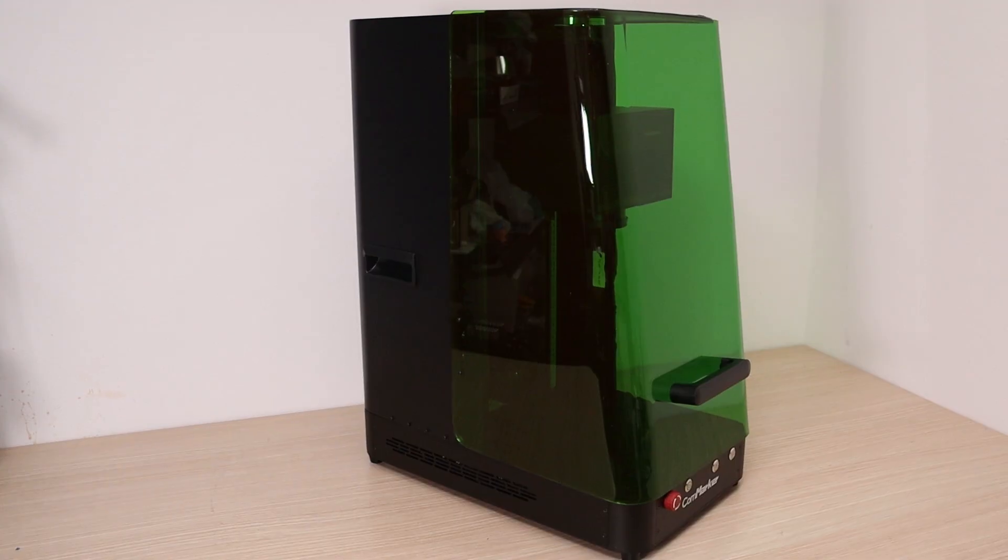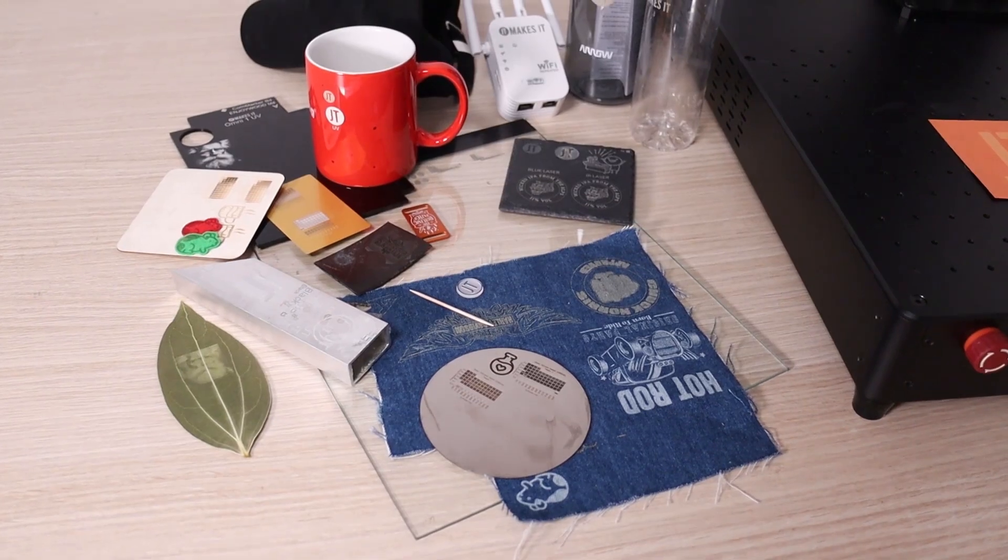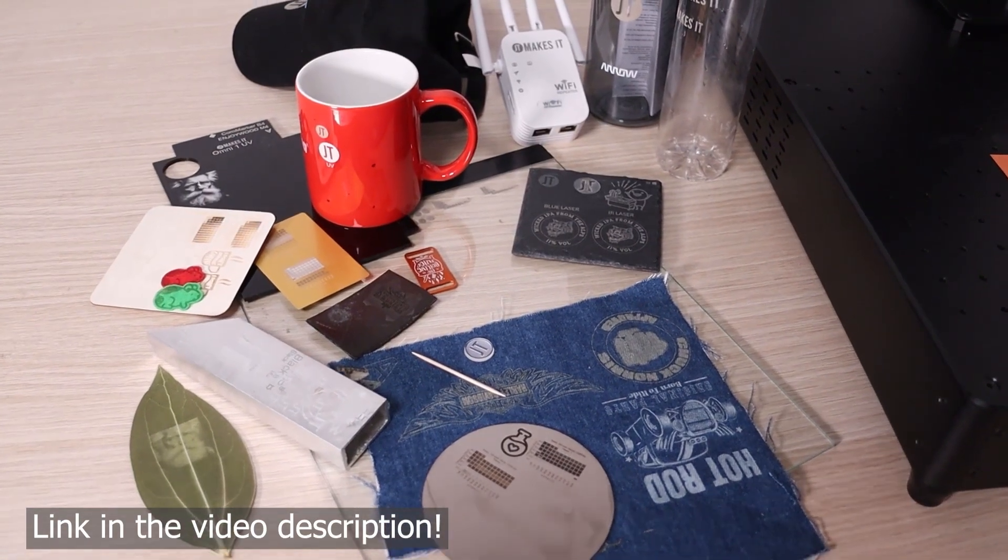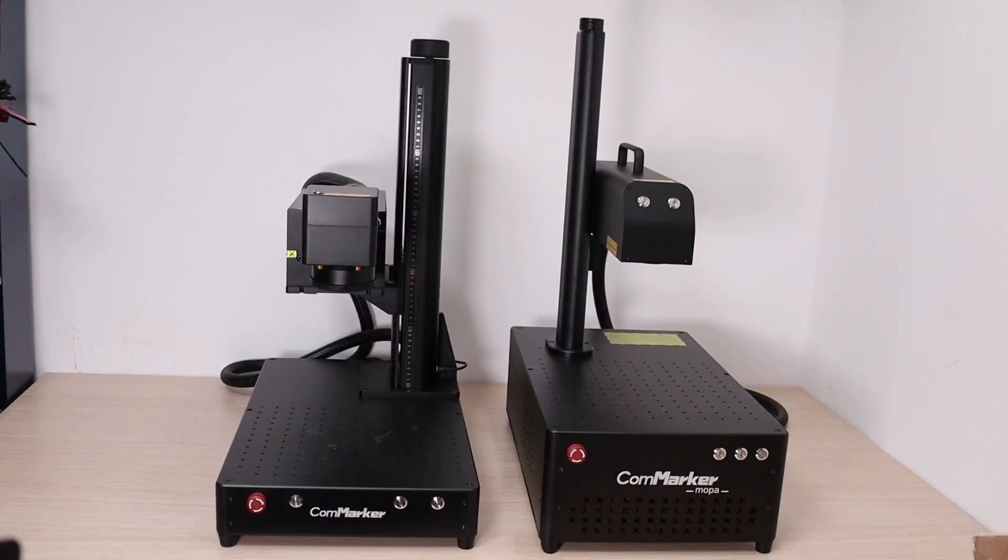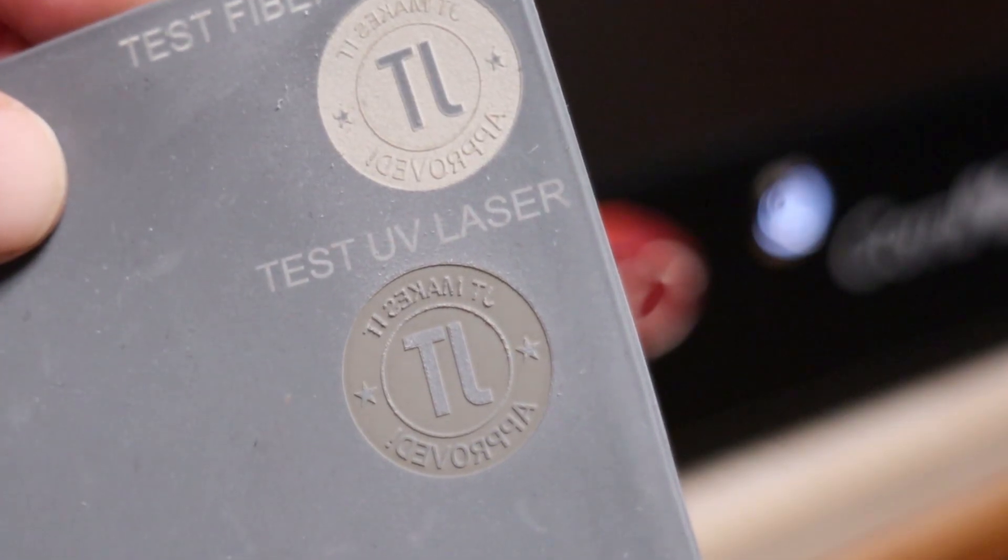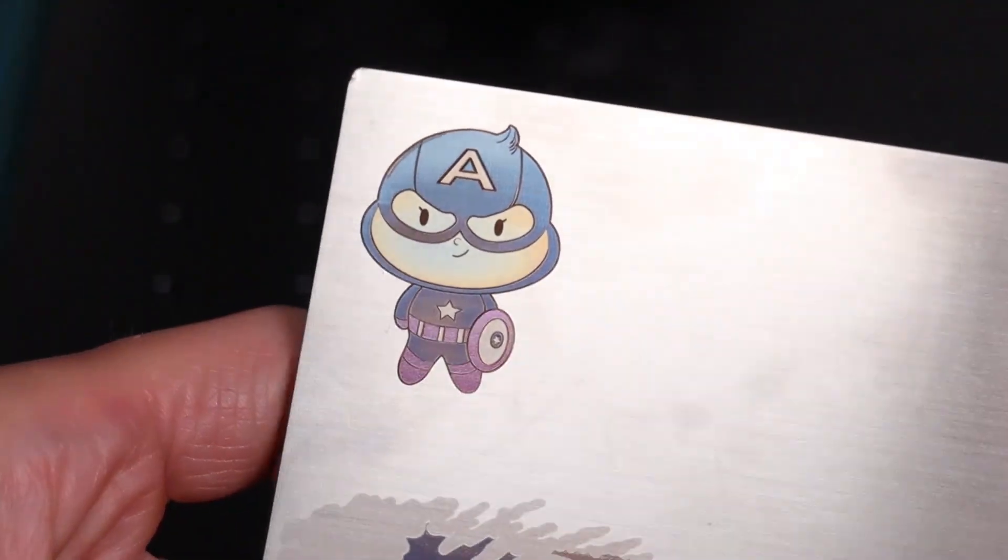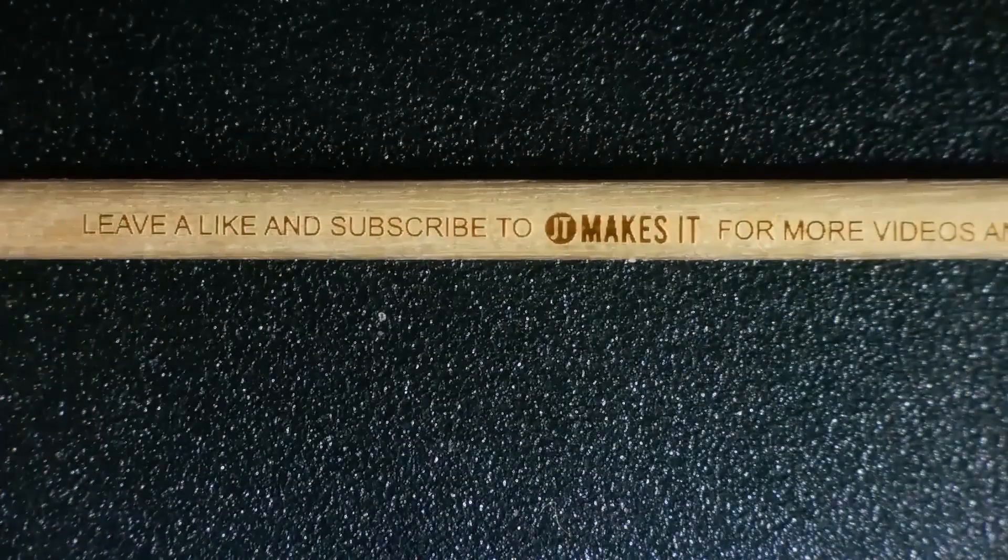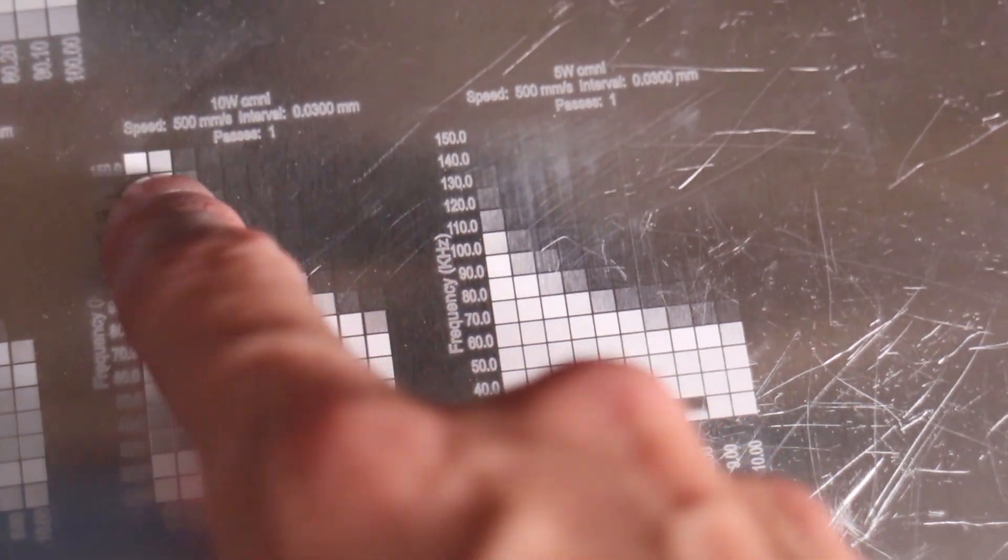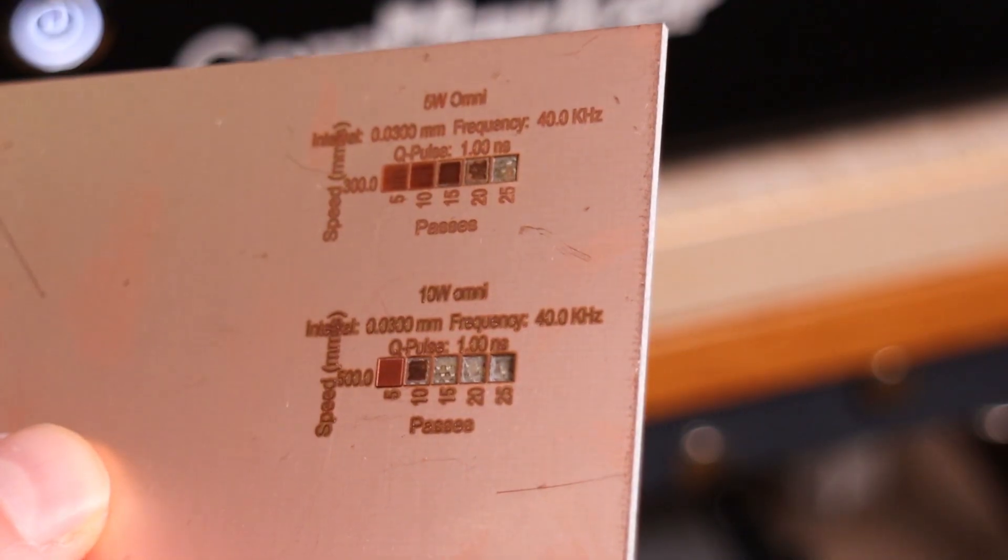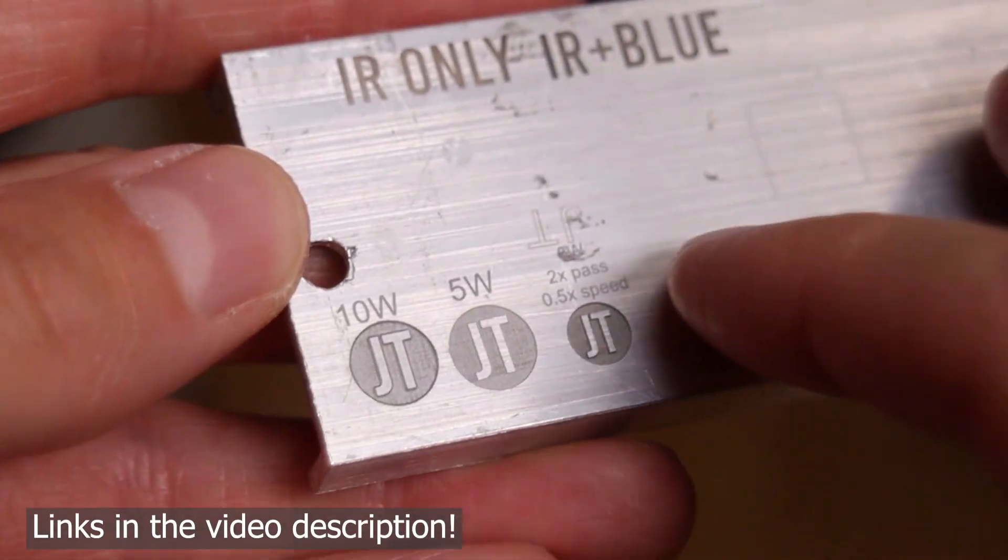Because this is a UV laser, it can engrave everything I showed off when I reviewed the 5-watt CommMarker Omni-1. I won't repeat all of that here, so definitely go check out that review if you haven't already. I've also created a video comparing UV lasers with fiber lasers to show how each type excels on different materials, and a comparison between a 5-watt and a 10-watt UV laser. I'll leave links to all of those videos in the description so you can dive deeper.